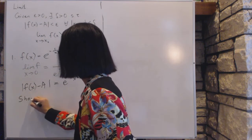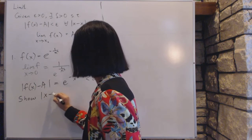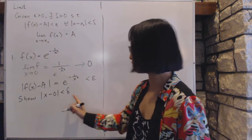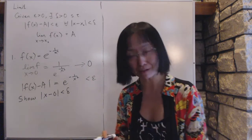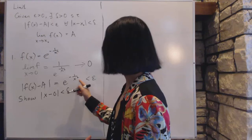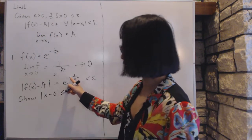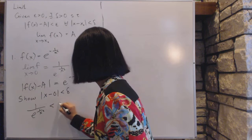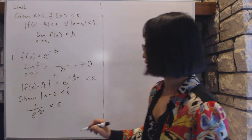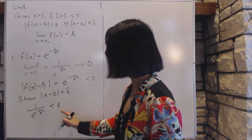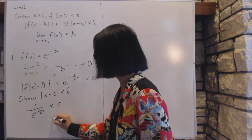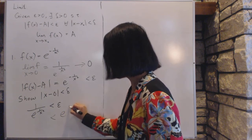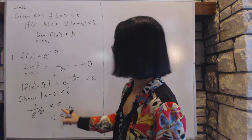We are trying to arrive at showing |x - 0| is less than delta for some delta. Starting from our inequality and working down: since there is a negative sign, we rewrite it as e^(1/x²) is less than one over epsilon. Because this is a positive value, we can multiply both sides and divide, maintaining the inequality sign — moving that term over and this term down.